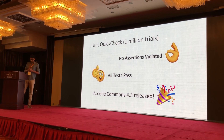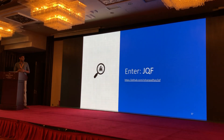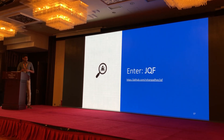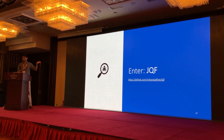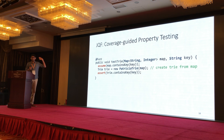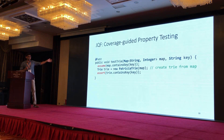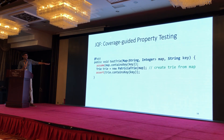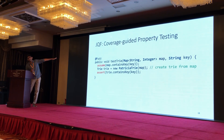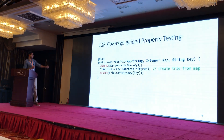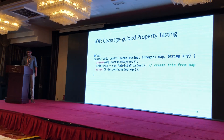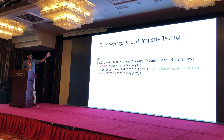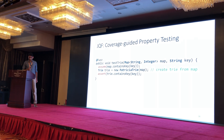Well, that's where we come in — we're the party poopers. Our tool is called JQF. It takes this property test exactly as written. The only thing we change is the annotation: instead of @Property, you say @Fuzz. Everything else is the same — the same code, the same assumptions, the same inputs.